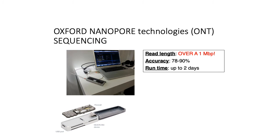The final technology we'll talk about in this lecture is nanopore sequencing. With nanopore sequencing, your maximum read length is actually over a megabase, which is an insanely long read. The accuracy is somewhere on the order of 78 to 90%, depending on what kind of sequence you're looking at. The throughput is relatively low compared to Illumina, but you get these super long reads.